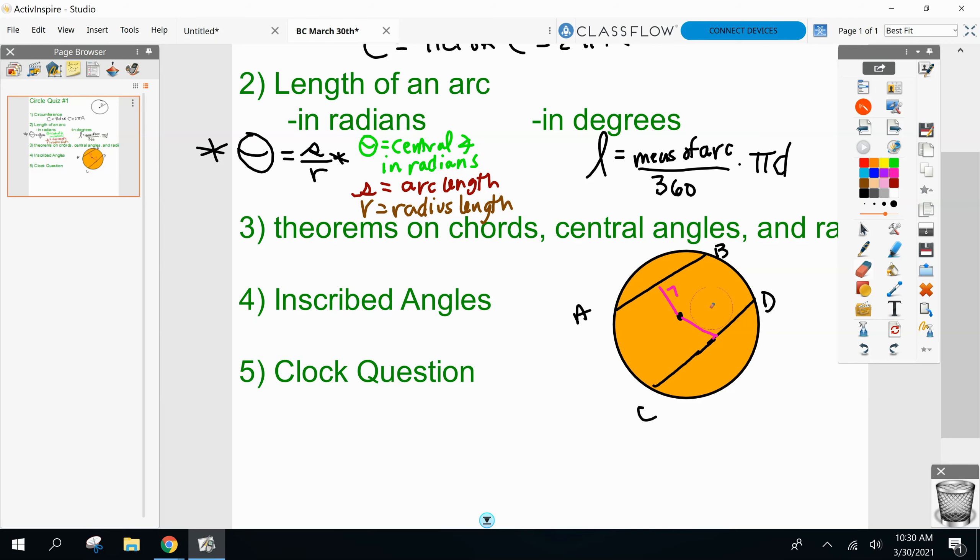Also in reverse, and this is just one theorem of the four: if I give you the chords are congruent, that must mean they're equidistant from the center and their arcs are congruent. So theorems on chords, central angles, and radii. I think we did two days of that. One day was the basic stuff, the facts, and then day two was the law of sines questions and the proofs.